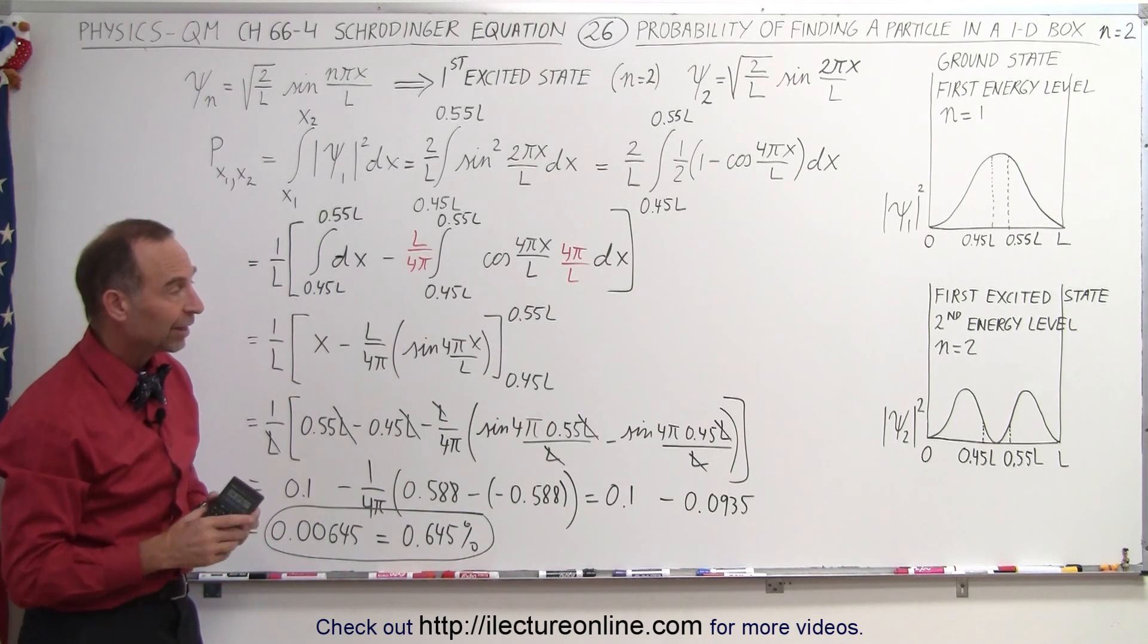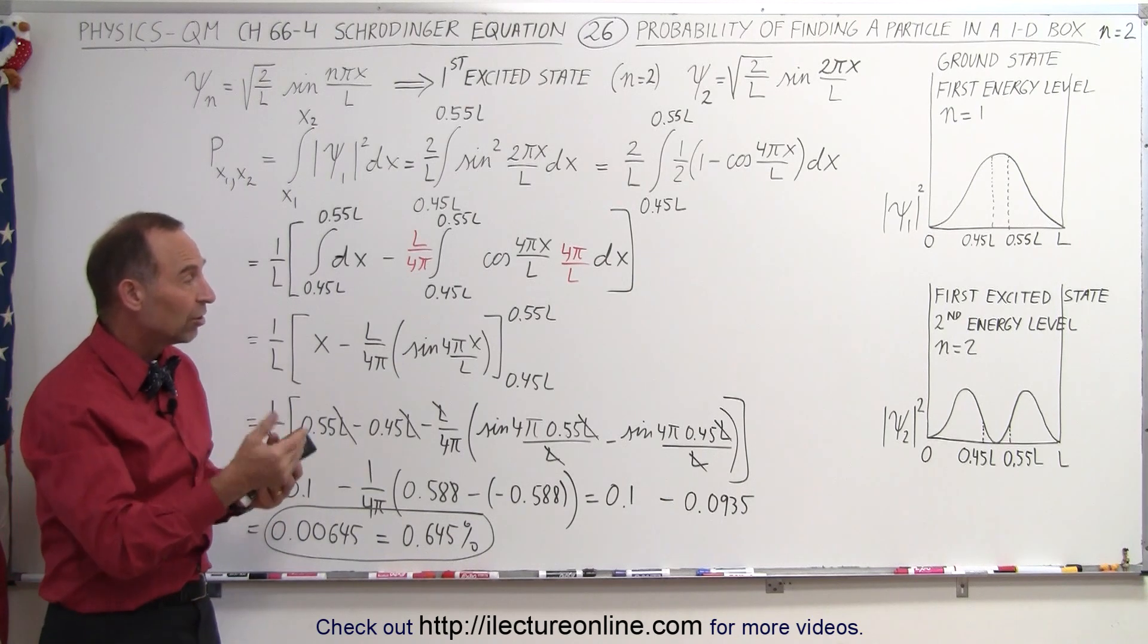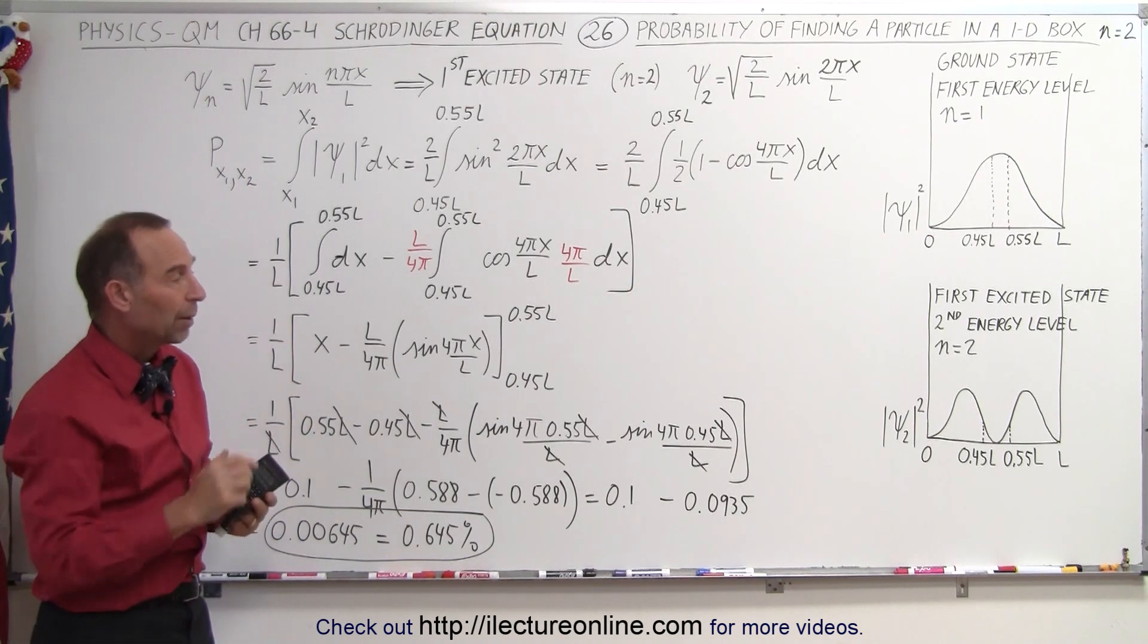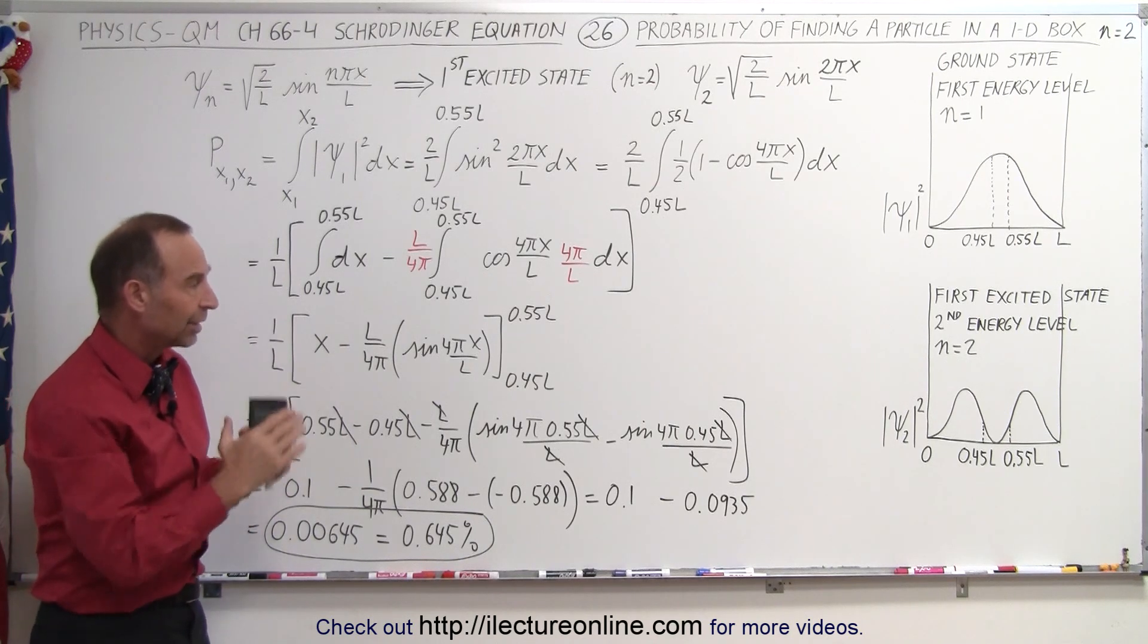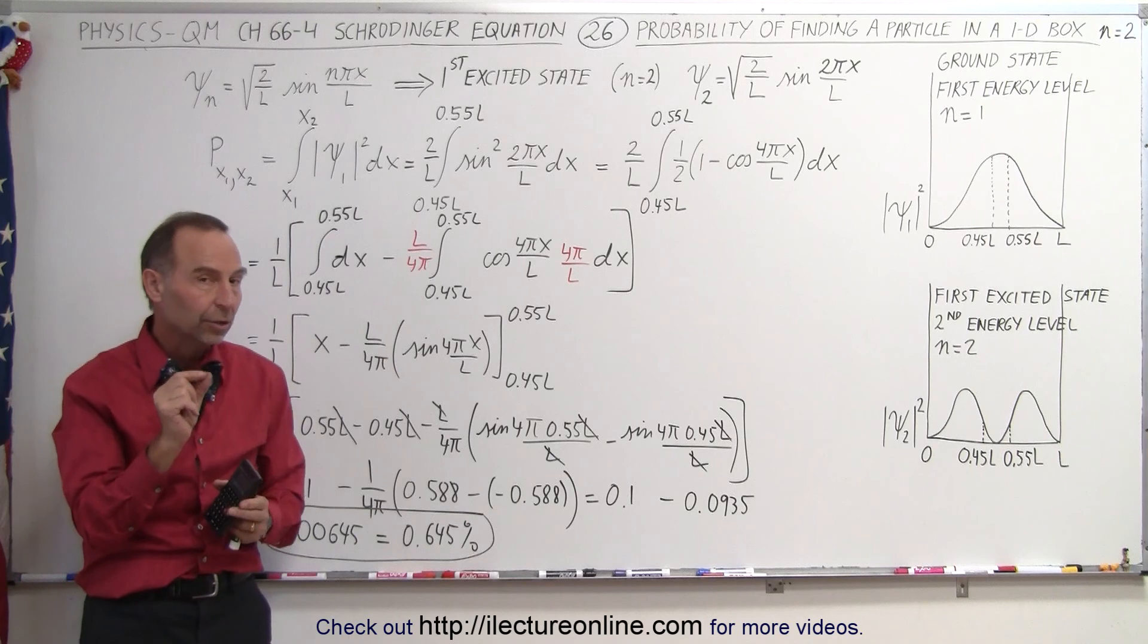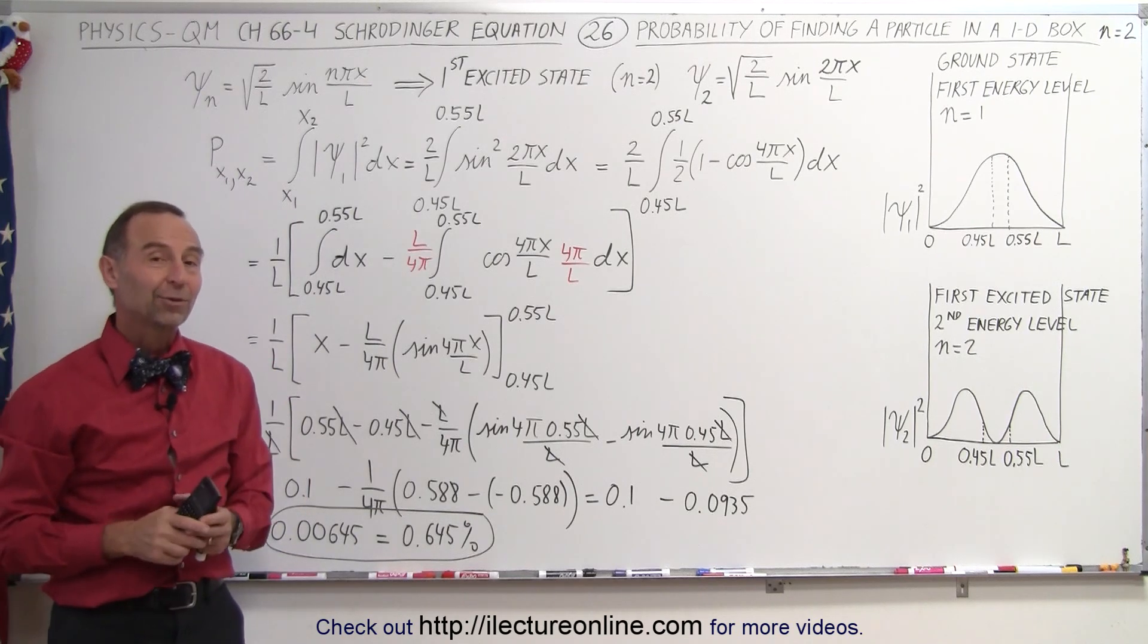So you can see that it does depend on the various energy states. Each energy state will have a different probability density function and therefore you'll get different results when you calculate the probability of finding a particle within a certain range of that box and that's how it's done.